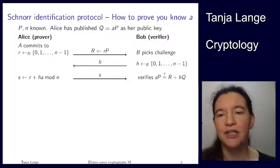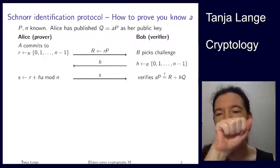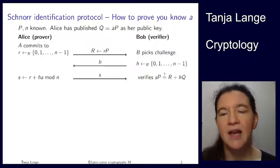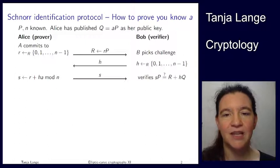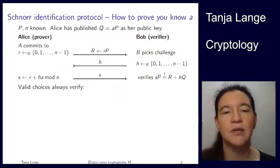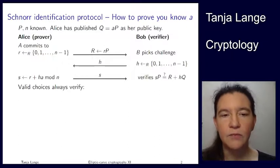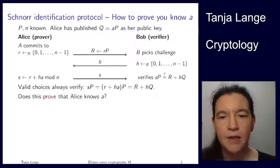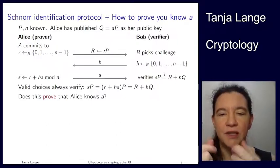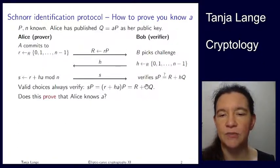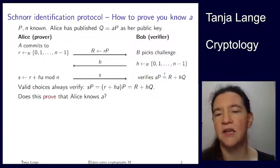Having seen the double scalar multiplication, you can do this a little bit faster by moving the h times Q over to the other side and computing sP minus hQ with a double scalar multiplication, and then just checking whether these are equal. I kept it this way because it's easier to see on the slide that this is actually correct. We plug in what s actually is: s times P equals r plus h*a times P, so lowercase r times P gives uppercase R from the first step, and a times P is Alice's public key Q. So we get h times Q and capital R, which is exactly what goes into the verification.